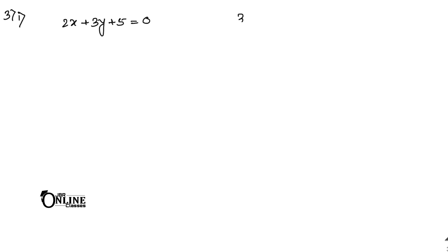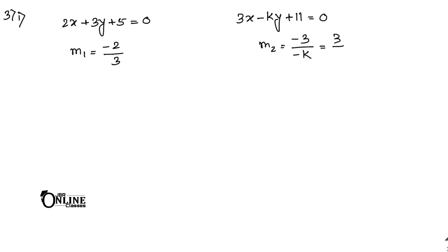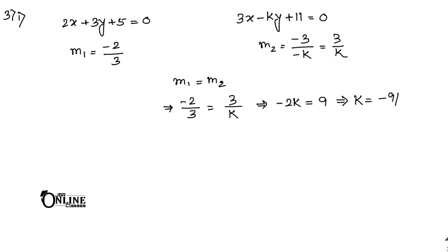Sum 3.1: Lines 2x + 3y + 5 = 0 and 3x - ky + 11 = 0 are parallel. Find k. Slope m₁ = -2/3, slope m₂ = 3/k. Since m₁ = m₂: -2/3 = 3/k, so -2k = 9, giving k = -9/2.